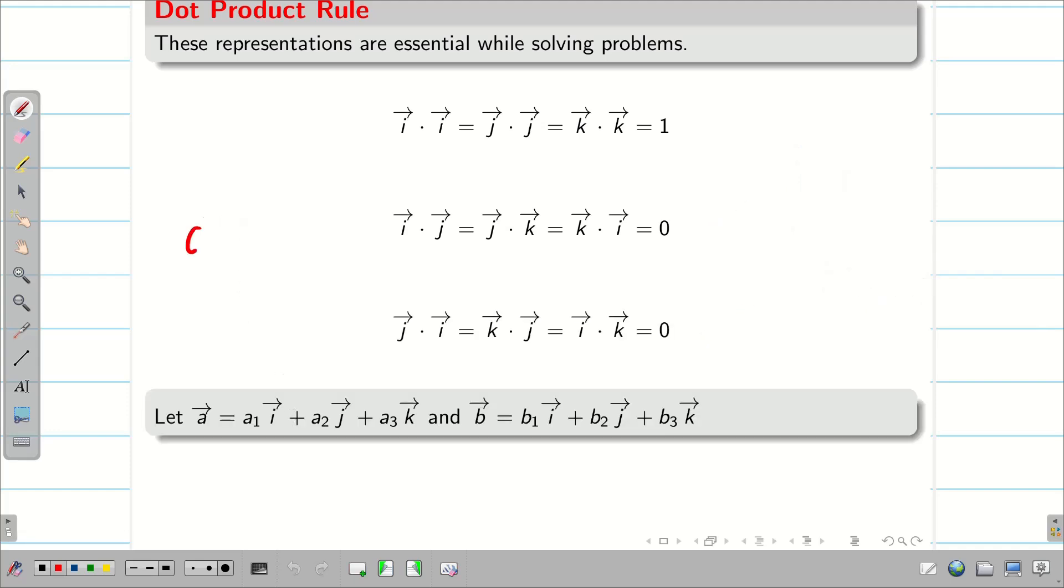Now, suppose I am taking two vectors a and b. If I want to do a vector dot b vector, just simply multiply a1 with b1 because i dot i is 1. Remaining all combinations are 0. Similarly, for j, a2 b2. For k, a3 b3. Therefore, a vector dot b vector is a1 b1 plus a2 b2 plus a3 b3. Only i dot i, j dot j, k dot k will be 1.